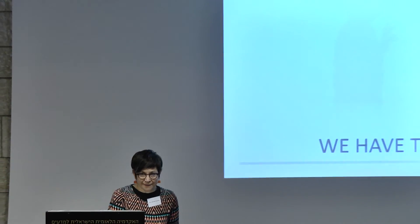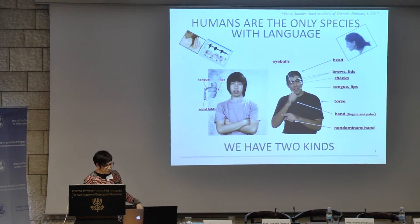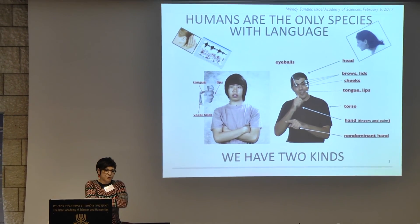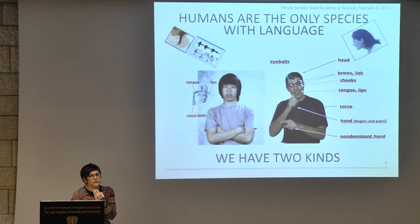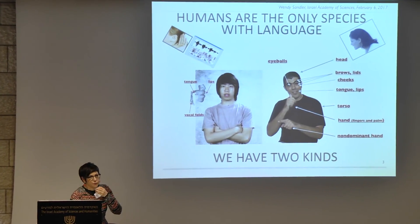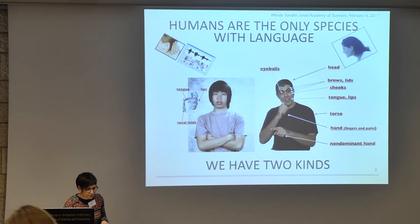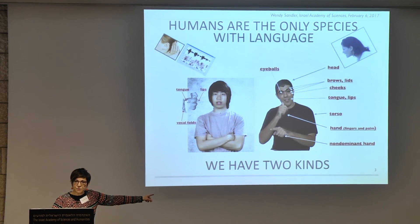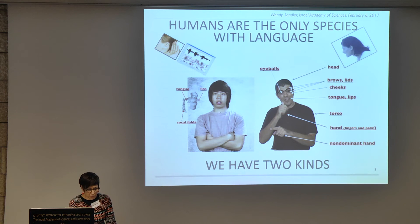We have two kinds of language: a spoken kind and a signed kind. From a physiological point of view, they're very different from one another. Spoken language is created within the vocal tract, and the result is perceived in acoustic form by the ears. Sign language is created by all of the visible articulators of the body, which are directly perceived by the eyes. They seem completely different, but we can learn a great deal about language in general by looking at sign language.